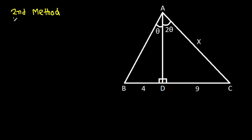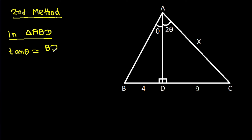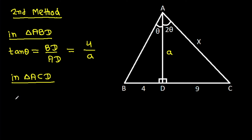For the second method: in triangle ABD, tan theta equals BD over AD. Suppose AD is A, then tan theta equals 4 over A. In triangle ACD, tan 2 theta equals CD over AD, which is 9 over A.